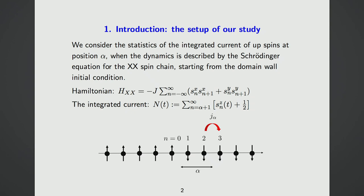The quantity we are interested in is the statistics of the integrated current of up-spins at position alpha, which counts the number of up-spins crossing from one place to another between time 0 and T. The dynamics is described by the Schrödinger equation for the XX spin chain, with a domain wall initial condition.